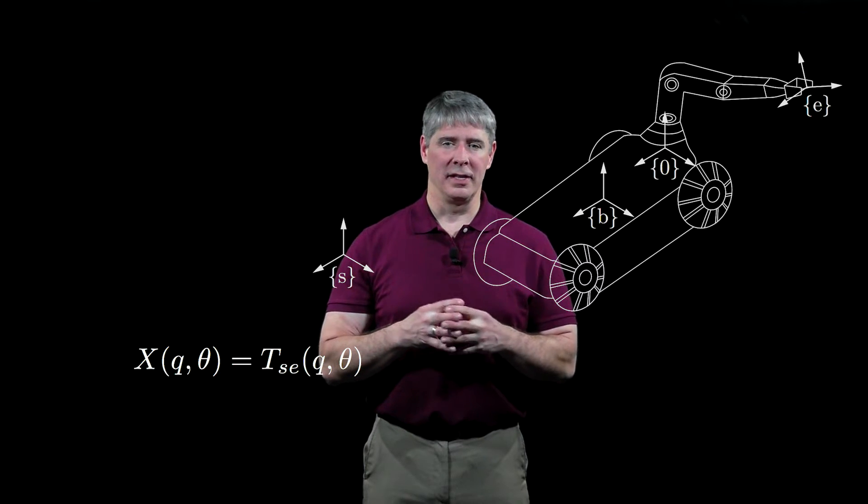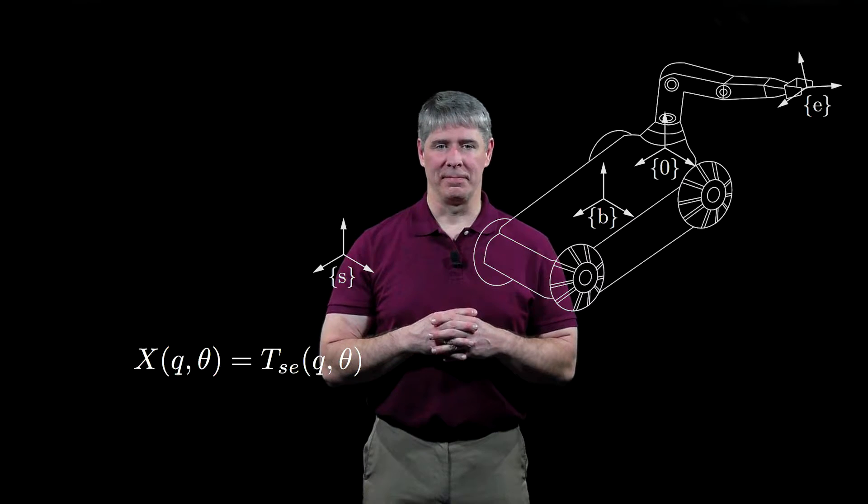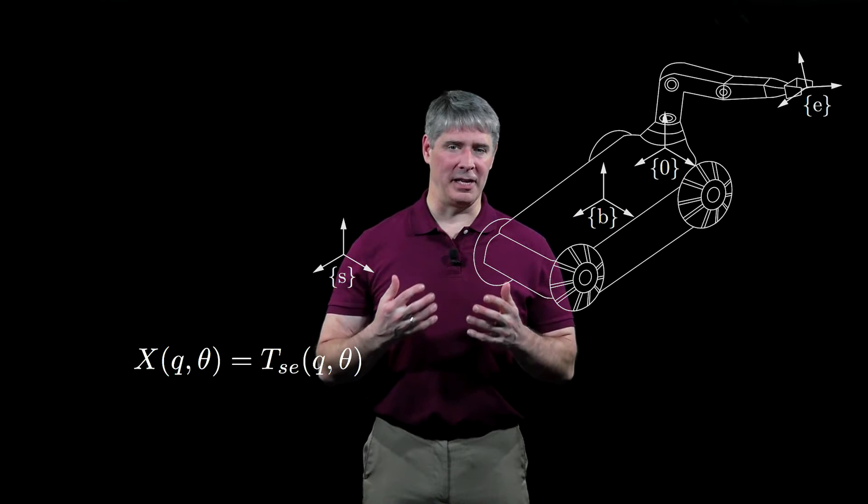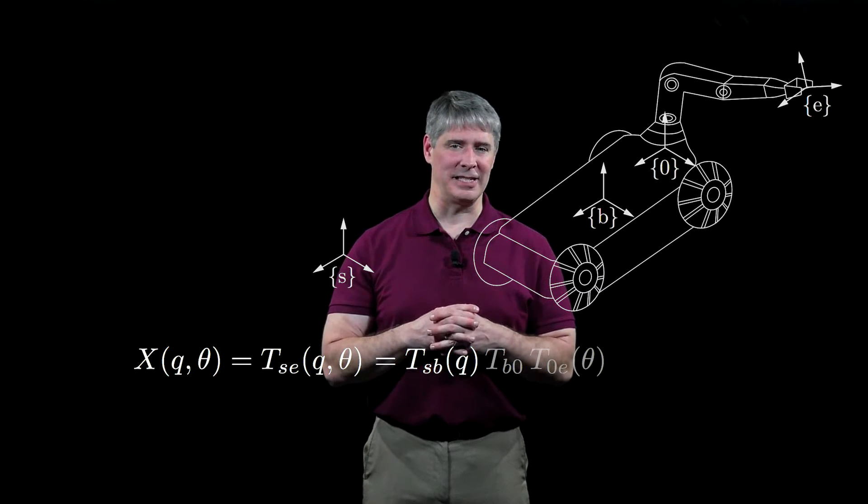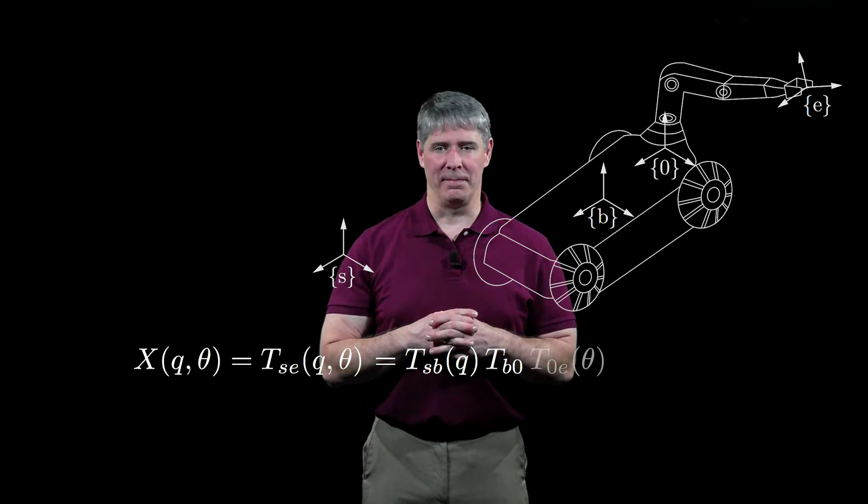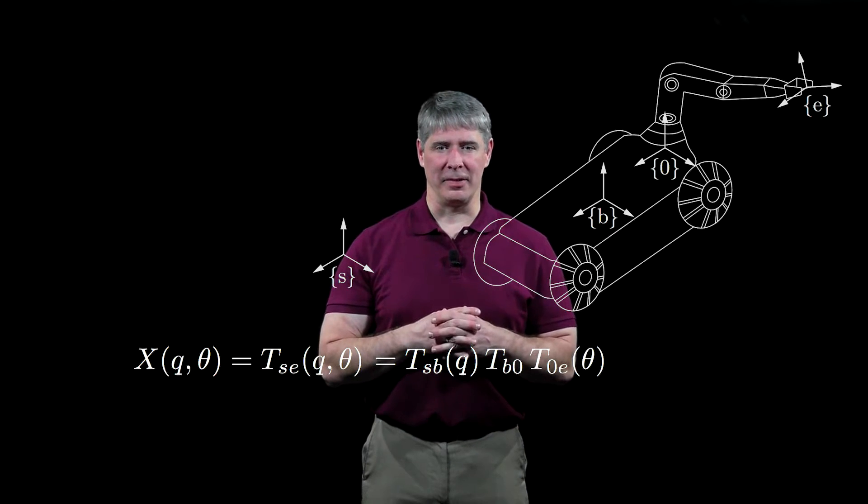The end effector's configuration in the space frame can be written X(q,θ), or TSE(q,θ). Q is the configuration of the mobile base, and theta is the arm configuration. This transformation is obtained by multiplying TSB(q), the constant offset TB0, and T0E(θ), the end effector frame relative to the zero frame.